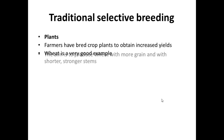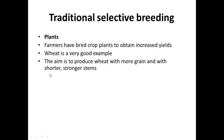How does traditional selective breeding work? In plants, let's say we have the aim to produce wheat with more grain and shorter, stronger stems. Why shorter stems? It reduces waste and increases the yield. The stems are not a useful part of the wheat plant for us. In a field, all the wheat plants are going to be a pretty similar height, so competition for light is irrelevant from the farmer's point of view — therefore the farmer would want shorter stems.